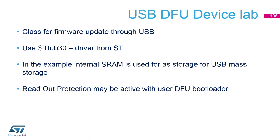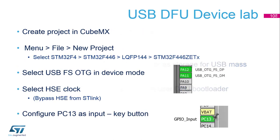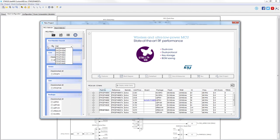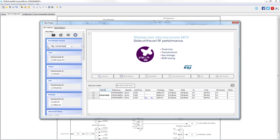One advantage of a user bootloader is that you may use other kinds of protection — for example, the readout protection, which I will show later. With the system bootloader you won't be able to use readout protection at all. So again we will start with CubeMX using the F446 Nucleo board.